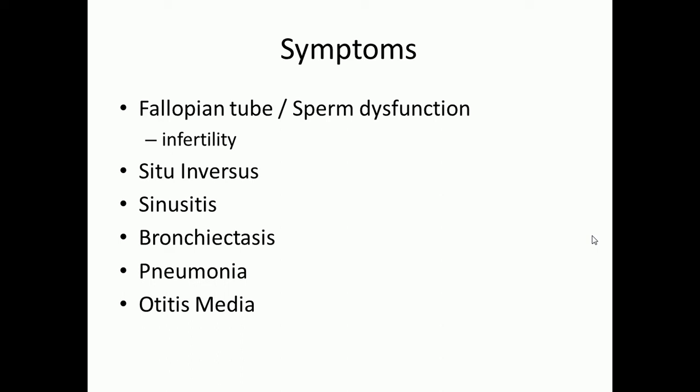Also, you get fallopian tube and sperm dysfunction. The fallopian tubes have fimbria — modified cilia at the junction with the ovary — that form a rhythmic beating pattern directing the egg from the ovary into the fallopian tube. However, if there is ciliary dysfunction, this beating pattern cannot occur. Additionally, sperm require a flagellum, which is just a modified cilium. When you have primary ciliary dyskinesia, you cannot have motile sperm, resulting in infertility.